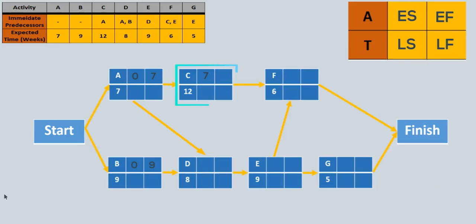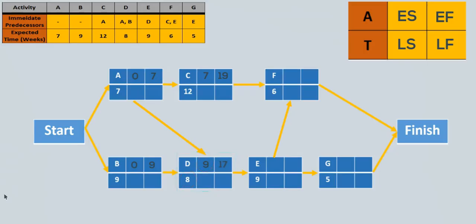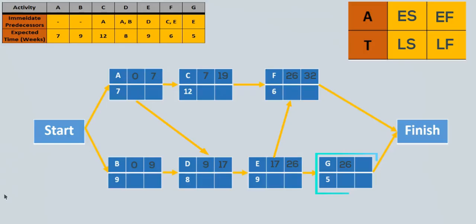C will have an earliest finish time of 7 plus 12, which gives 19. D needs both A and B to be finished before it can start. Since the earliest finish times for A and B are 7 and 9 respectively, the highest of the earliest finish times preceding an activity will be the activity's earliest start time. So D starts at 9 and finishes at 9 plus 8, which gives 17. E has only one predecessor D, so E can start at 17 and finish earliest at 26. F has predecessors C and E; since the higher earliest finish time is 26, F can start at 26 and finish at 32. G also can start earliest at 26, since it has only one predecessor E, and G finishes at 26 plus 5, which gives 31.